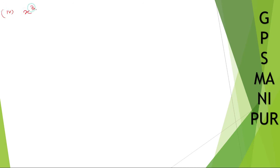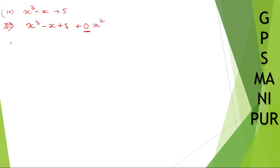Roman number four: x cubed minus x plus 5. Here, we need to find the coefficient of x square, but there is no x square term. We can write it as zero into x square, so the coefficient of x square is zero.